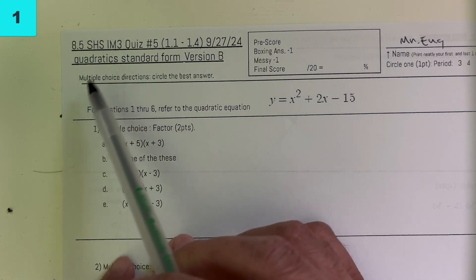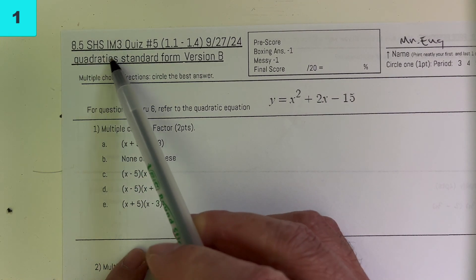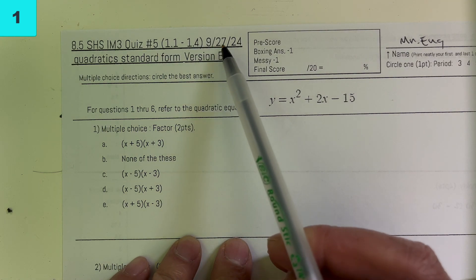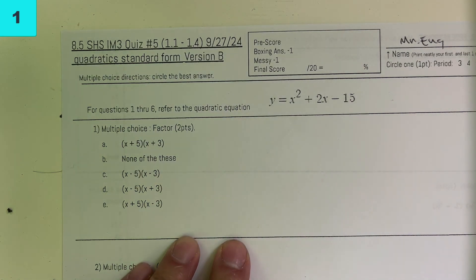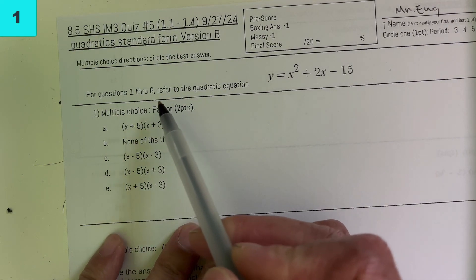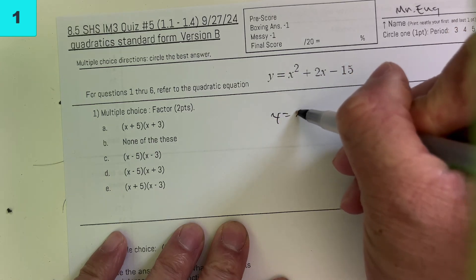Hey guys, this is Mr. Ng, going over 8.5 Integrated Math 3, quiz number 5, 1.1 to 1.4, September 27, 2024. We're working with quadratics. For questions 1 through 6, not including 5, we're going to use this equation, so you can repeat that for every problem.